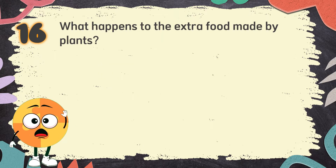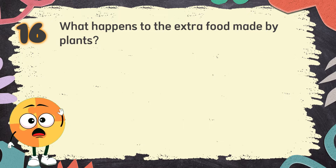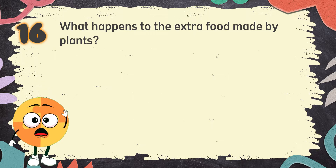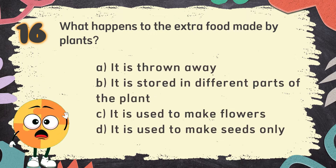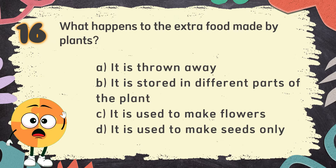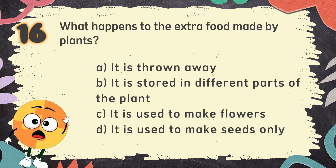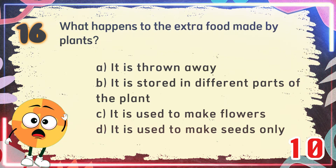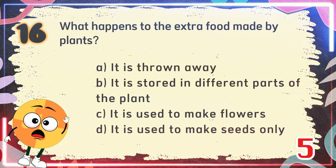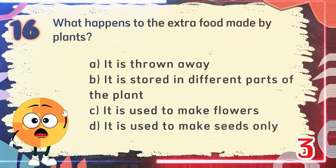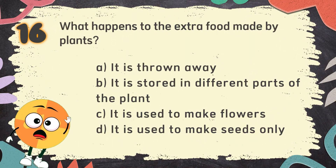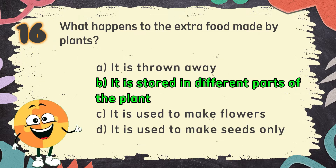Number 16: What happens to the extra food made by plants? The choices are: A. It is thrown away, B. It is stored in different parts of the plant, C. It is used to make flowers, D. It is used to make seeds only. The correct answer is B. It is stored in different parts of the plant.